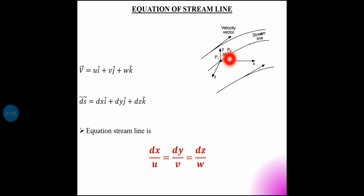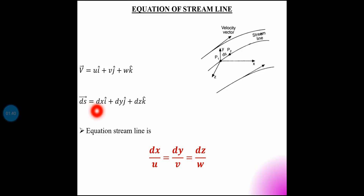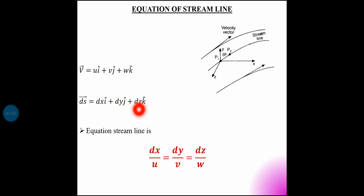The vector from P1 to P2 is denoted by ds, which is the change in position vector. That is, ds is equal to dx·i plus dy·j plus dz·k. The components are dx along x, dy along y, and dz along z direction. This is the streamline general equation, and this is the velocity vector.